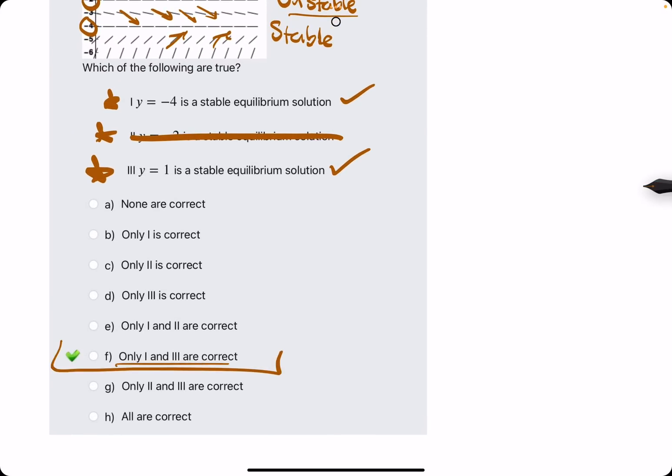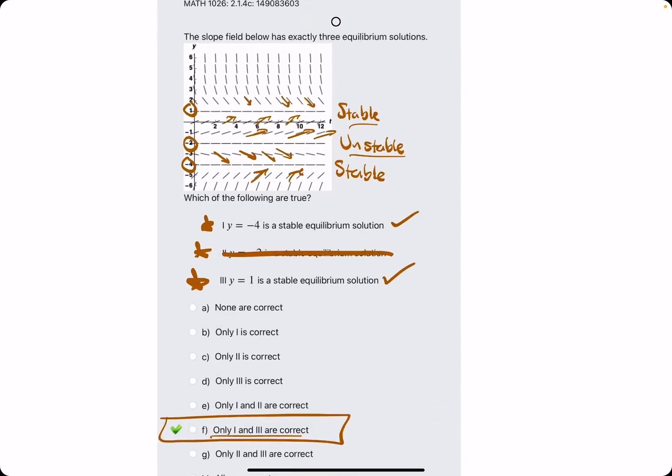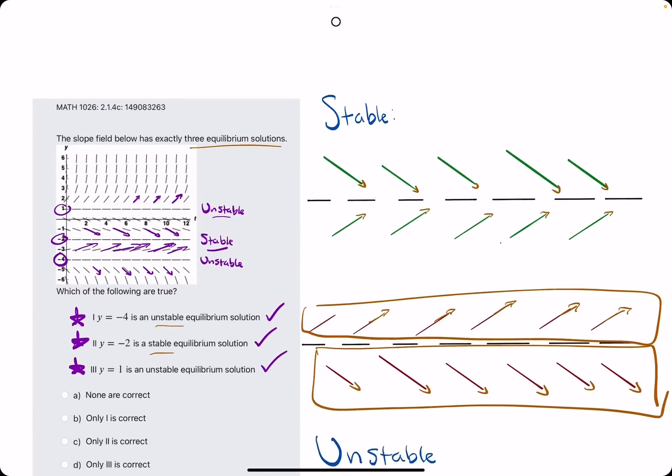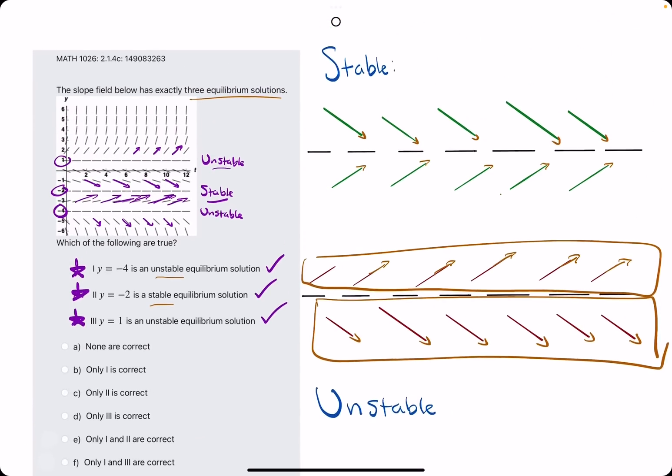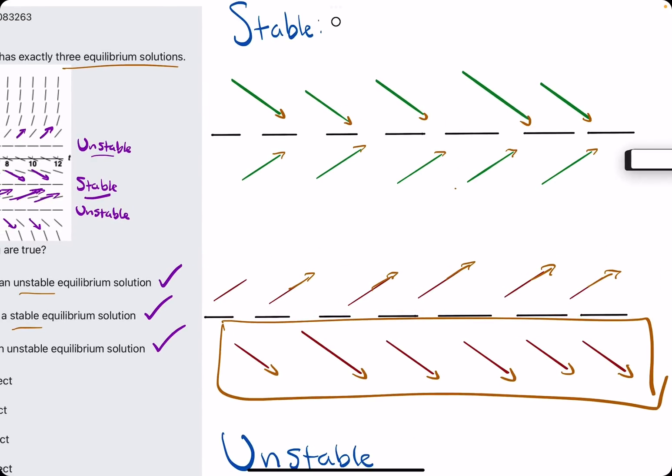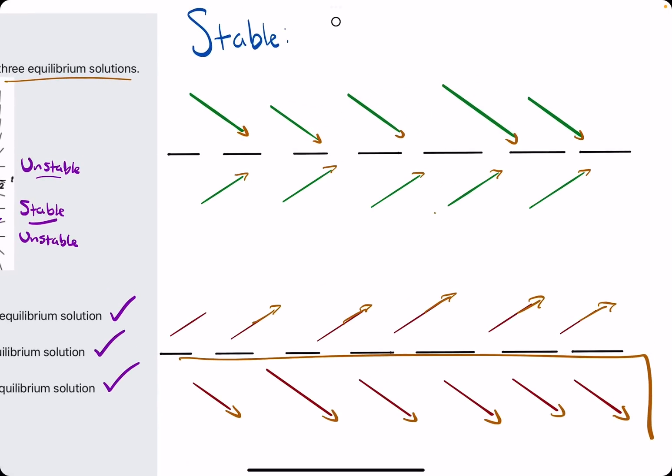So, that is option F. Break out the eraser to see that F is our answer. Hope this helps. Feel free to save this image. I think it's very helpful visually. Alright. Thank you.